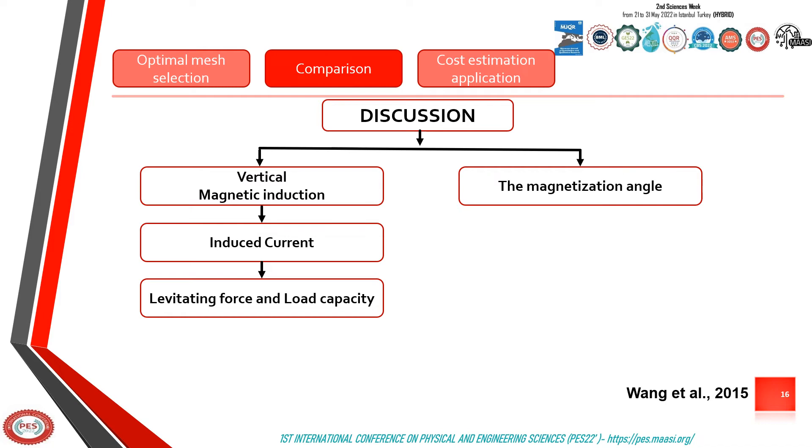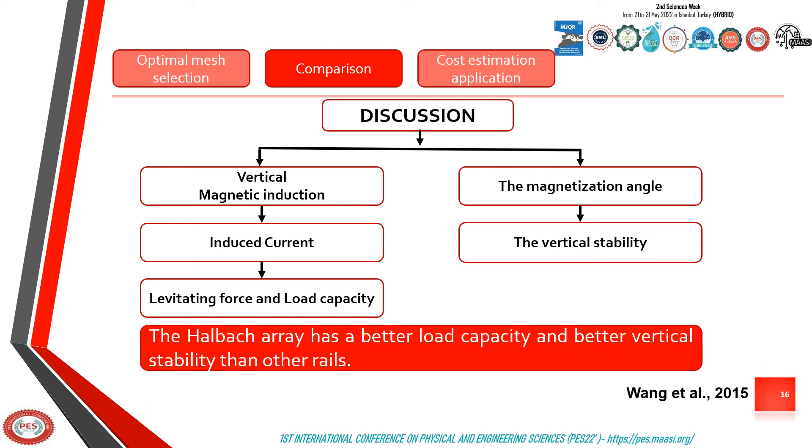We conclude also that the greater the magnetization angle, the greater the vertical stability. So, the Halbach array has better load capacity and better vertical stability than the other arrays.